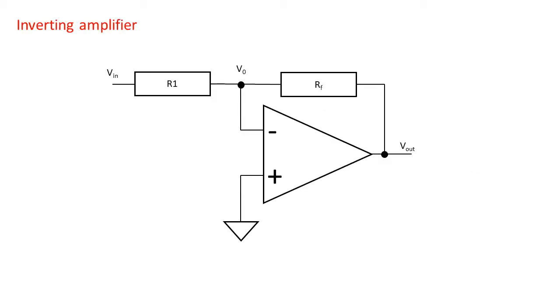We have an inverting amplifier topology with feedback resistor RF, input resistor R1 and input voltage VIN. The virtual ground will be labeled V0.